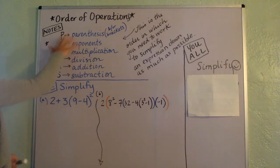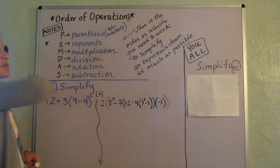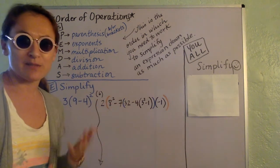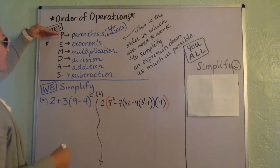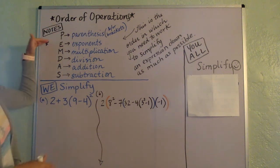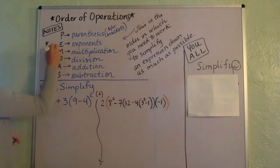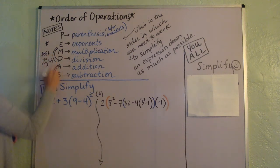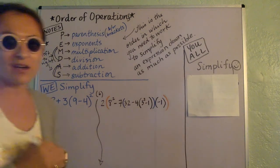So we have parentheses, right? Order of operations. You learned this a long time ago. This is just the order in which you need to work in order to simplify an expression down as much as possible. So parentheses and or the brackets. Always do that first. Then you have the exponents. Then you've got the multiplication and the division. And I just want to remind you these two things. When you get to this point, you go left to right. And then the same is true with the addition and subtraction.